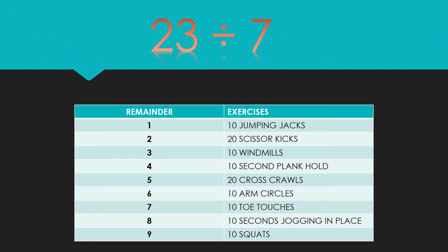This problem is 23 divided by seven. Pause the video and take your time in solving and then hit play after you exercise the remainder. This answer was three with a remainder of two. Your remainder of two equals 20 scissor kicks.